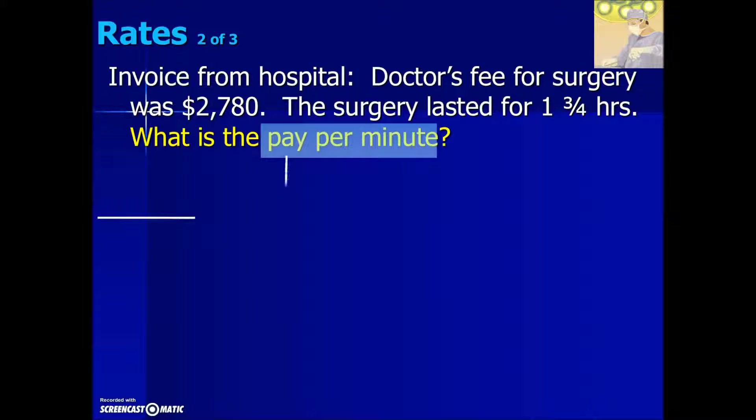So we have a pay per, that's our fraction representation translates into generically money, that would be the pay per minute is generically represented with the term time. We are given that the invoice amount or the pay received to this surgeon was $2,780. The time that the surgery lasted in a decimal representation is 1.75 hours and the problem is asking is not price per hour but price or pay per minute. Our money is alright but we need to replace our hours with minutes.